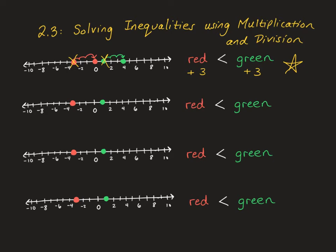On the second number line, I'm going to subtract 3 from both sides. The red dot is going to move from negative 3 and end up at negative 6. And the green dot was at 1, so it moves to negative 2. And once again, if we look at this concept — is red still less than green? Yes, we can see on the number line that that is definitely true.